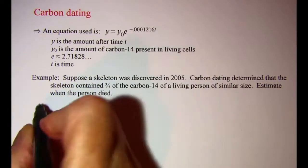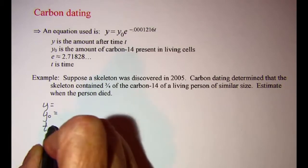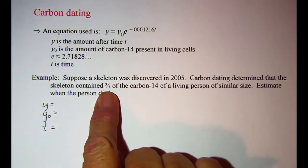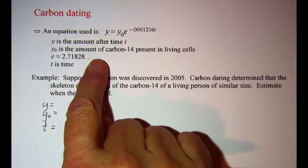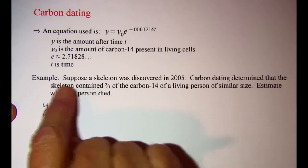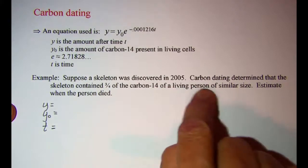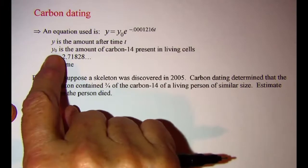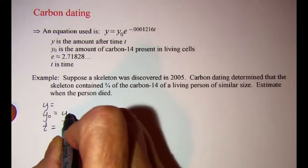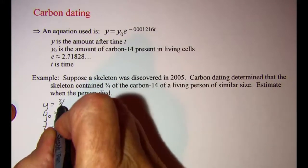Let's list our variables y, y sub zero, and t. Now it doesn't give us any amount of carbon-14, either the amount after time t or the amount present in living cells, but we are told that the skeleton contains three-fourths of the carbon-14 of a living person. So our y sub zero, which is the amount of a living person, we'll just leave that as y sub zero, and then the amount in the skeleton is three-fourths of that.